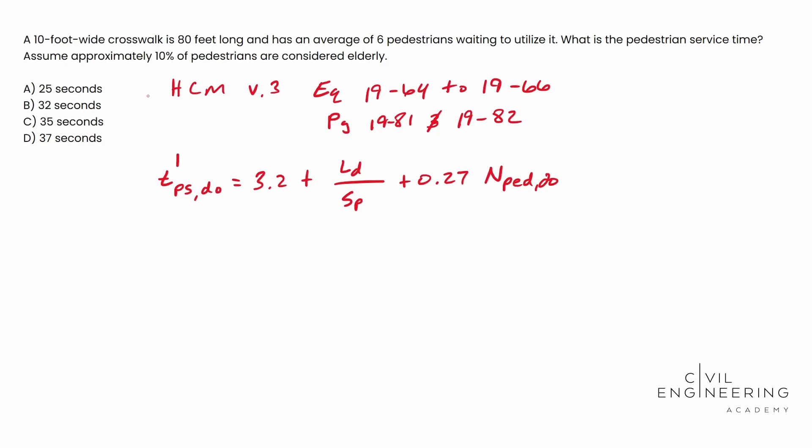This is your pedestrian service time, T sub PS. Your LD is going to be your length of your crosswalk, and then your SP is your speed of the pedestrian. All right, and so they give us a ton of hints in this problem.